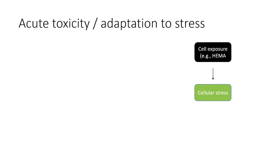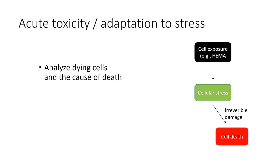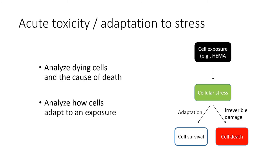A common strategy for mechanistic in vitro toxicity studies is to analyze the mechanism that causes cell death after an exposure. At lower exposure concentrations, when no measurable viability loss is observed, there may still be events that lead to adverse effects in humans. An in vitro approach we have been utilizing at NEOM is to study how cells adapt to low-dose exposures. This adaptation may indicate effects of low-dose exposures that do not result in cell death.